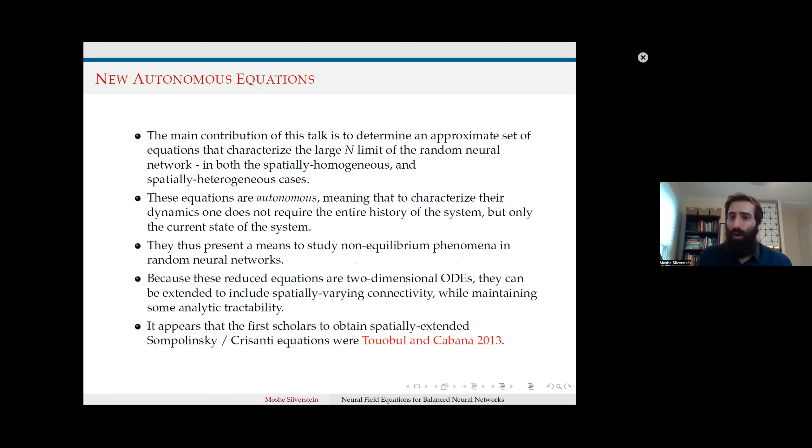The main contribution I'm presenting today is a model consisting of autonomous equations, meaning they do not require the entire history of the system, only the current state. These equations represent the large N limit of random neural networks and can be extended to the spatially heterogeneous case. This will allow us to study non-equilibrium phenomena using more classical techniques of dynamical systems.